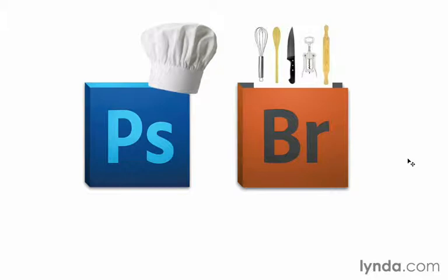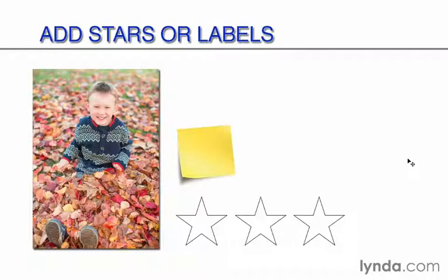Here in this movie, I simply want to introduce you to one topic that we'll be talking about in Adobe Bridge: how we can filter, find, and access our images more quickly. In particular, I want to talk about how we can add stars or labels to our photographs. In this first movie, I just want to walk through a few slides to highlight some shortcuts that we'll actually be using in the next movie.